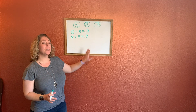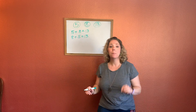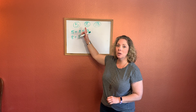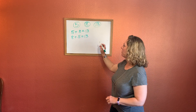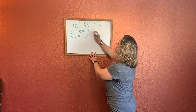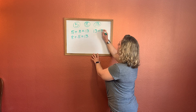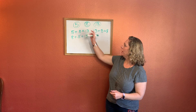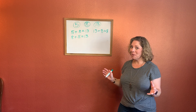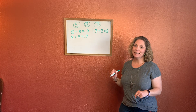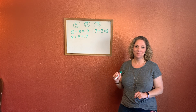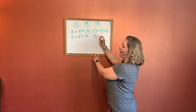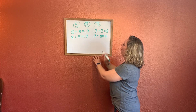Very good. Now we need our subtraction sentences for this fact family. Remember, with subtraction sentences, we start with the number of greatest value and then we subtract one of our other numbers. So we're going to start with 13 minus 5 equals 8 — 13, 5, and 8. Fact families always use the same numbers because they're part of the family. So what's our last number sentence for this fact family? You guys are awesome — 13 minus 8 equals 5.